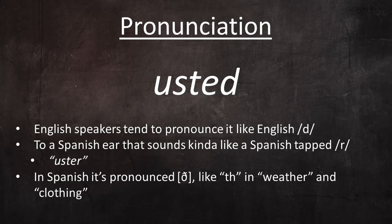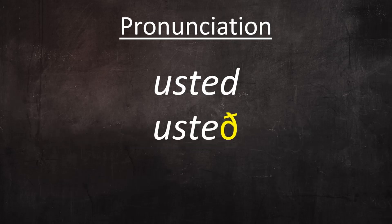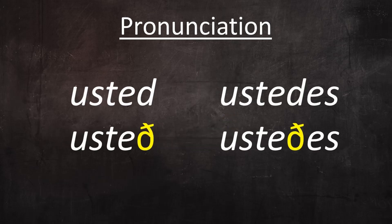In standard Spanish, d in this position is an interdental fricative like the th in English words like 'weather' and 'clothing.' So this pronoun is pronounced usted. There's also a plural version of this pronoun, and in standard Spanish the d is also pronounced as an interdental fricative like the English voiced th. So this word is pronounced ustedes. English speakers tend to pronounce it 'ustedes' with an English-style d, and to a Spanish ear that sounds more like an r than a d. Don't do it. It's correctly pronounced ustedes.